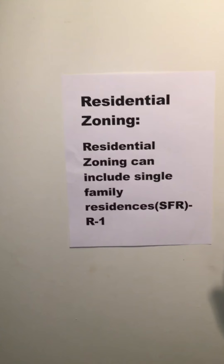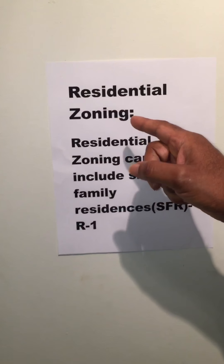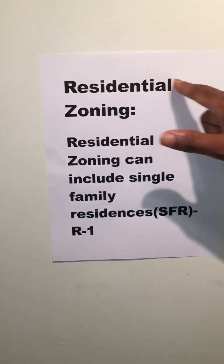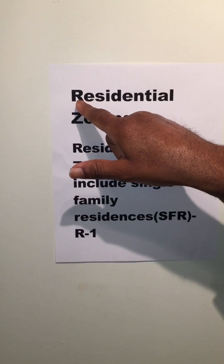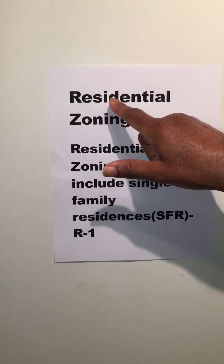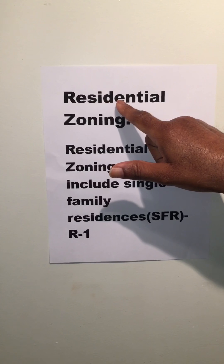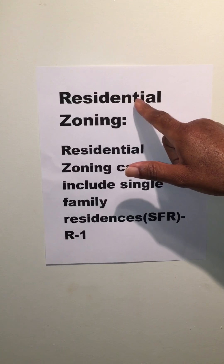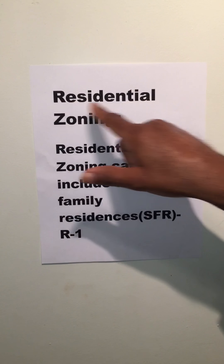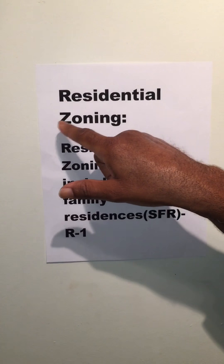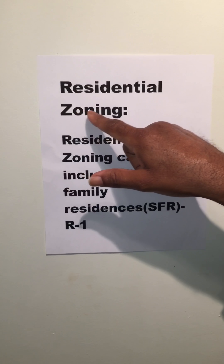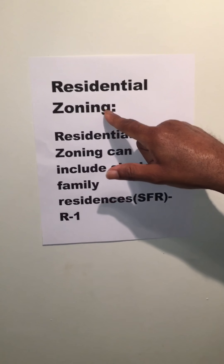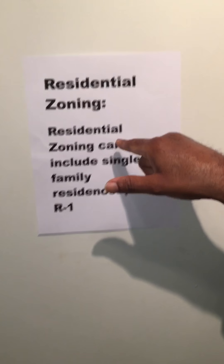Now, residential zoning — I would like to spell it for you: R-E-S-I-D-E-N-T-I-A-L, residential. Zoning: Z-O-N-I-N-G, zoning.